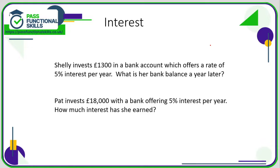Let's take a look at interest. Here we've been told that Shelly invests thirteen hundred pounds in a bank account which offers a rate of five percent interest per year. That means the bank is going to be giving Shelly a nice little bonus for her being a loyal customer. So if Shelly invests thirteen hundred pounds and she gets five percent interest, then her bank balance will increase by five percent by the end of the year.